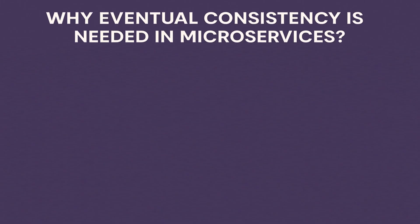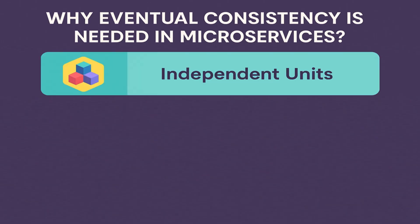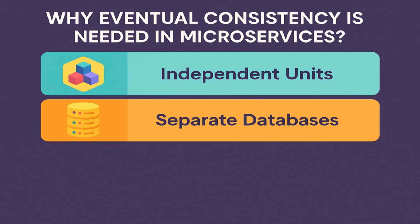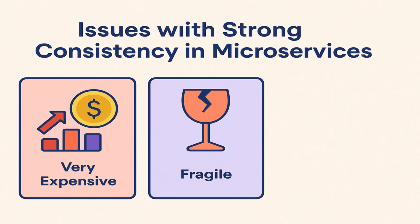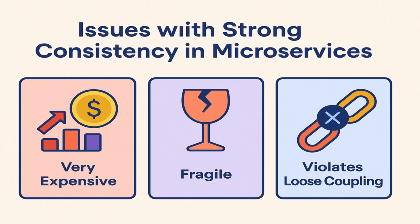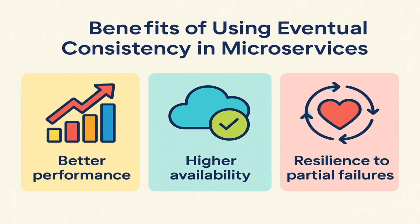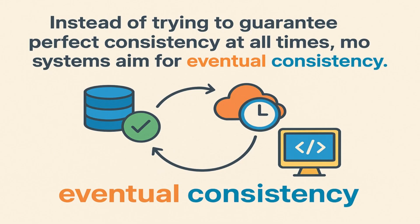Another important question is: why is eventual consistency needed in microservices? Microservices are independent units that communicate over the network. Each service has its own database, transaction boundary, and failure modes. Coordinating them in a strongly consistent way is very expensive, fragile, and it also violates the loose coupling principle. Instead, we allow each service to make local decisions and then inform other services asynchronously. This gives us better performance, higher availability, and resilience to partial failures. Modern systems aim for eventual consistency — it is the key idea behind modern system design.